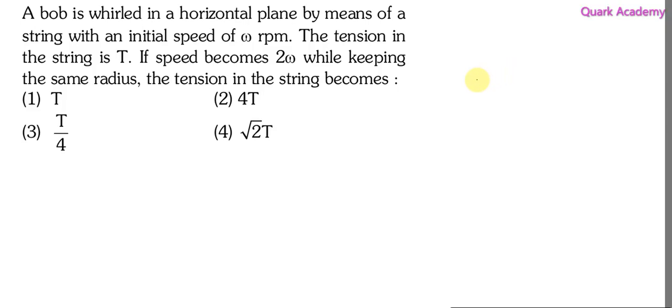There is a bob which is exhibiting horizontal circular motion, tied with a string of length r. It is moving in a circular path of radius r.